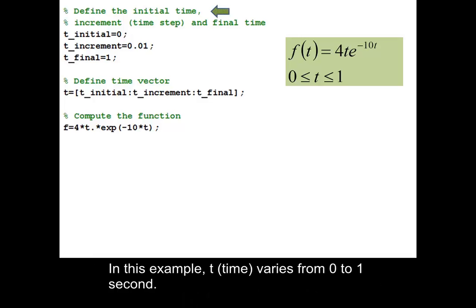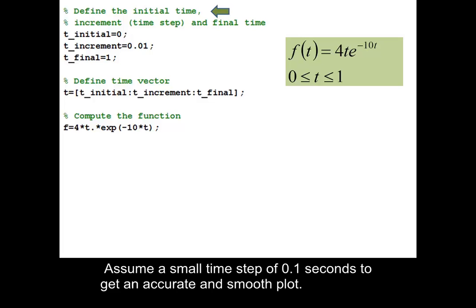In this example, t varies from 0 to 1 second. Assume a small time step of 0.1 seconds to get an accurate and smooth plot.